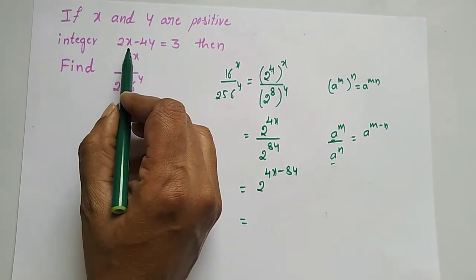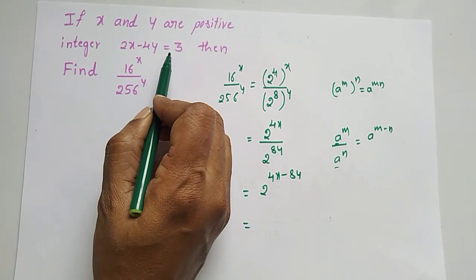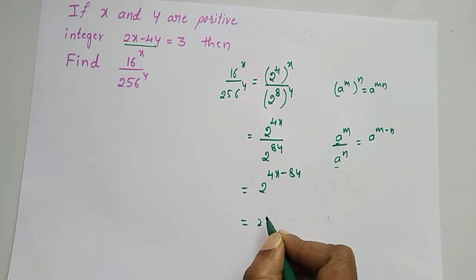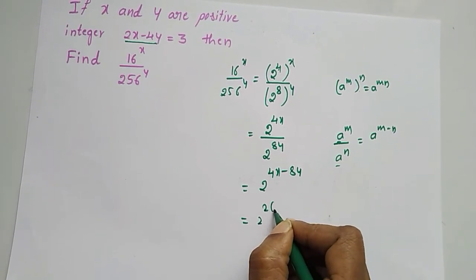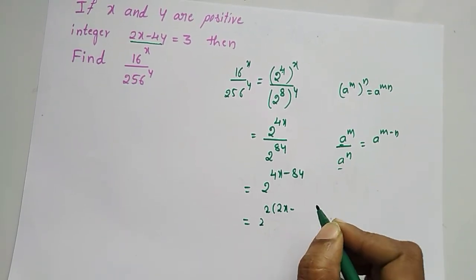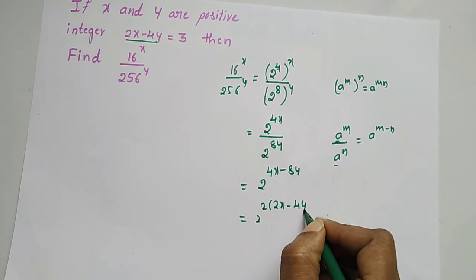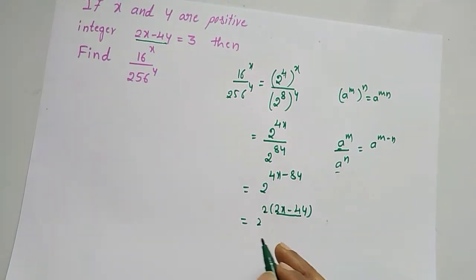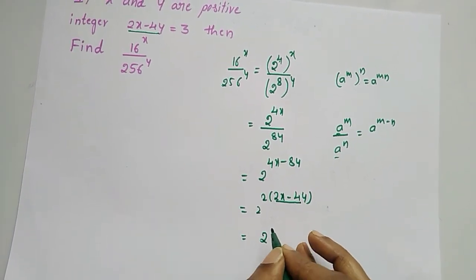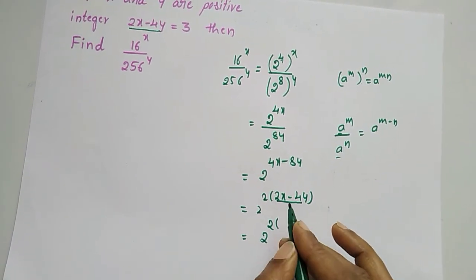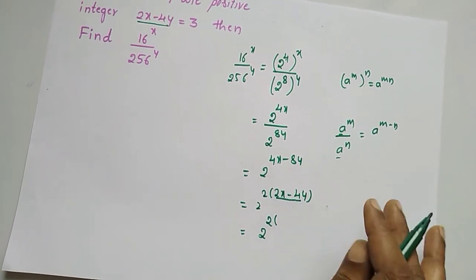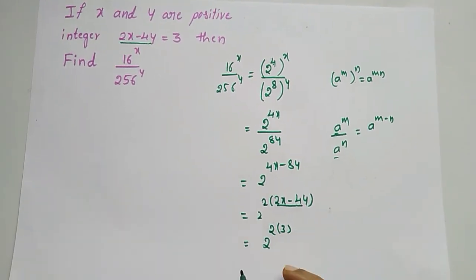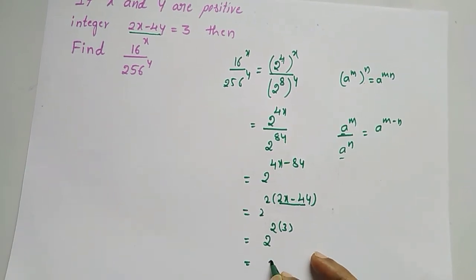We can write 4x minus 8y as 2 times (2x minus 4y). Since 2x minus 4y is equal to 3, this becomes 2 to the power 2 into 3, which is 2 to the power 6, equal to 64.